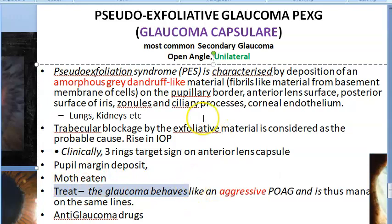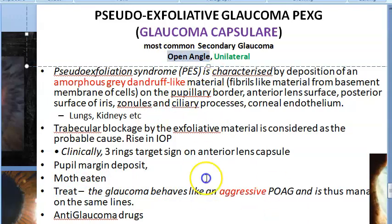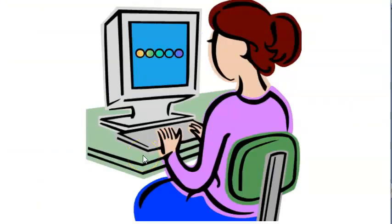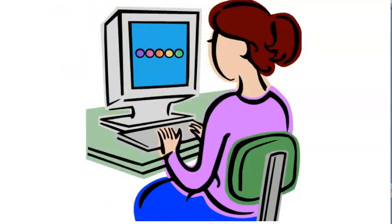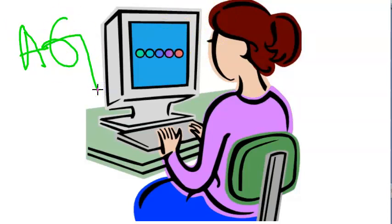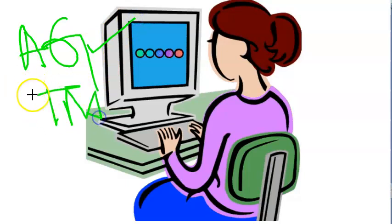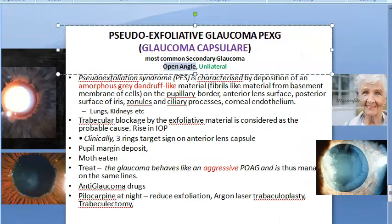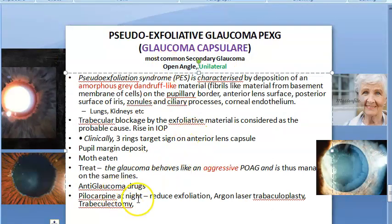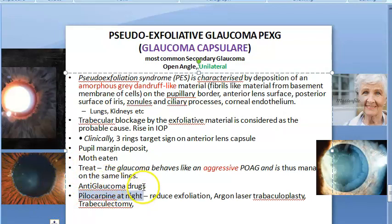How will you treat this glaucoma? Since it is open angle, you give standard anti-glaucoma drugs — latanoprost, timolol, carbonic anhydrase inhibitors, etc. Because the trabecular meshwork is blocked, you can also do laser trabeculoplasty to increase drainage. Alternatively, you can do trabeculectomy — a filtration surgery creating an alternate path for aqueous to drain into the sub-conjunctival space. Pilocarpine may also be used to induce miosis at night so that exfoliation reduces.